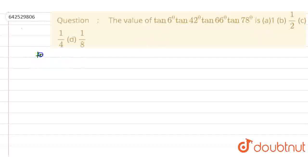So, we know one formula: tan θ tan(60° - θ) tan(60° + θ) is always equal to tan 3θ.